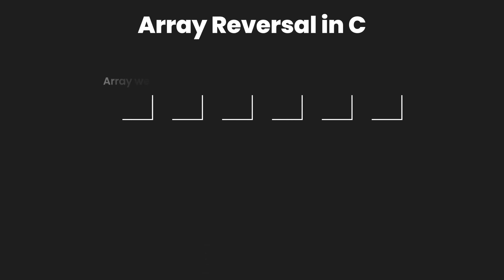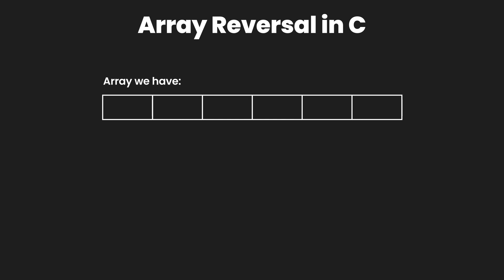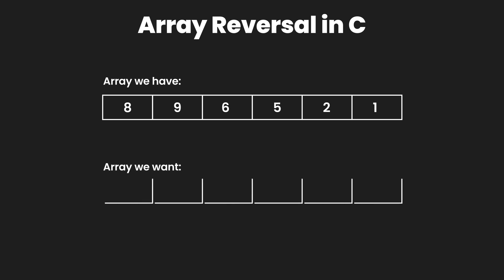We have an array of six elements. Let's fill up this array with the following integer values: 8, 9, 6, 5, 2, 1. What we want to do is write a function or some code that would reverse this array, so that after running the code our array should look like 1, 2, 5, 6, 9, and 8.